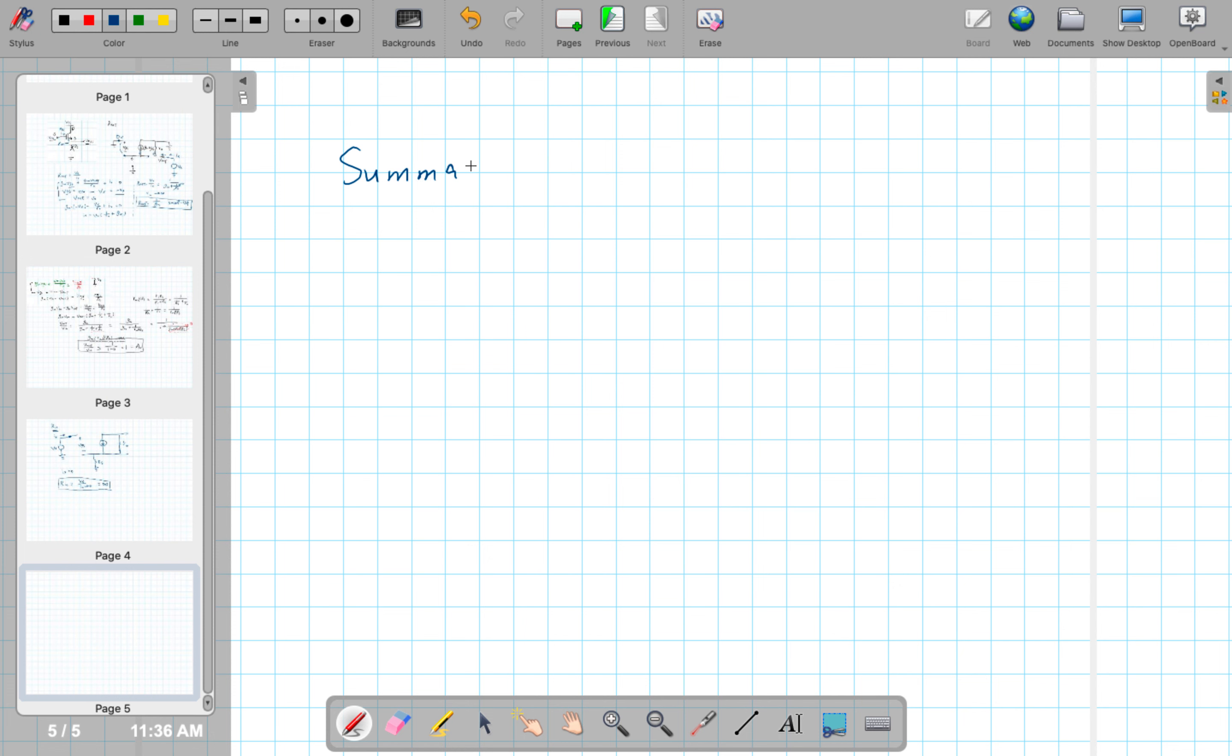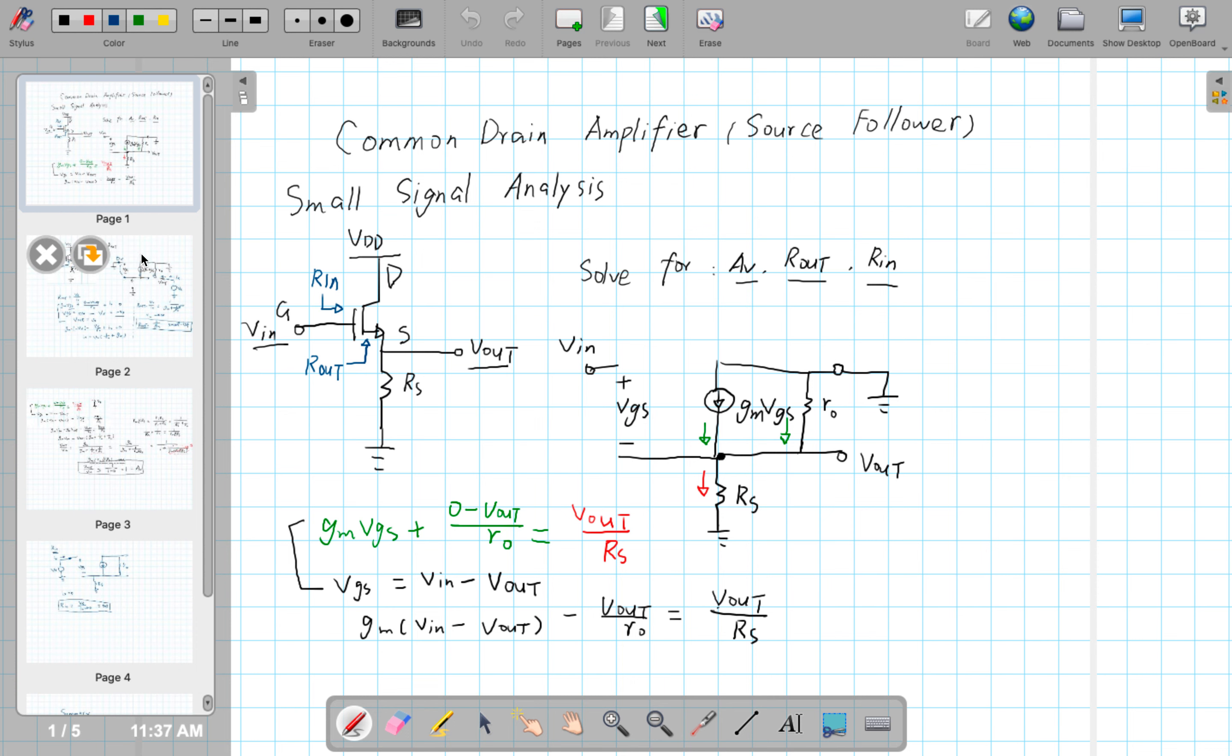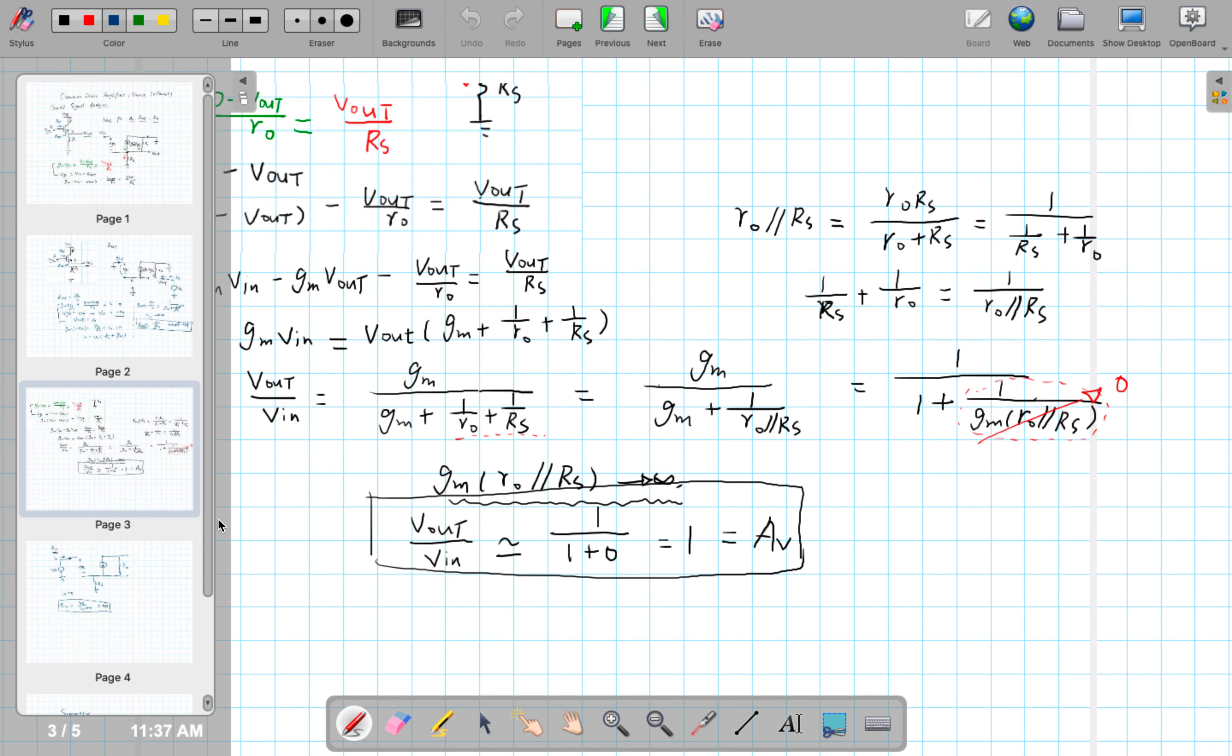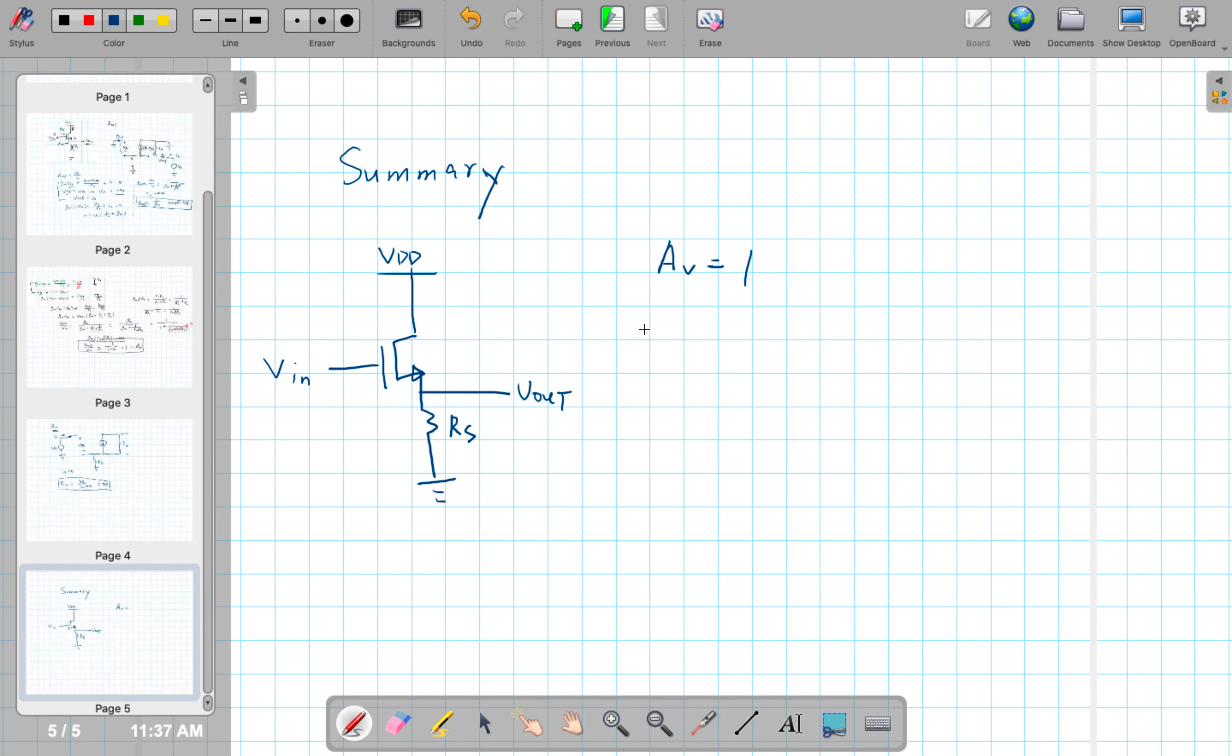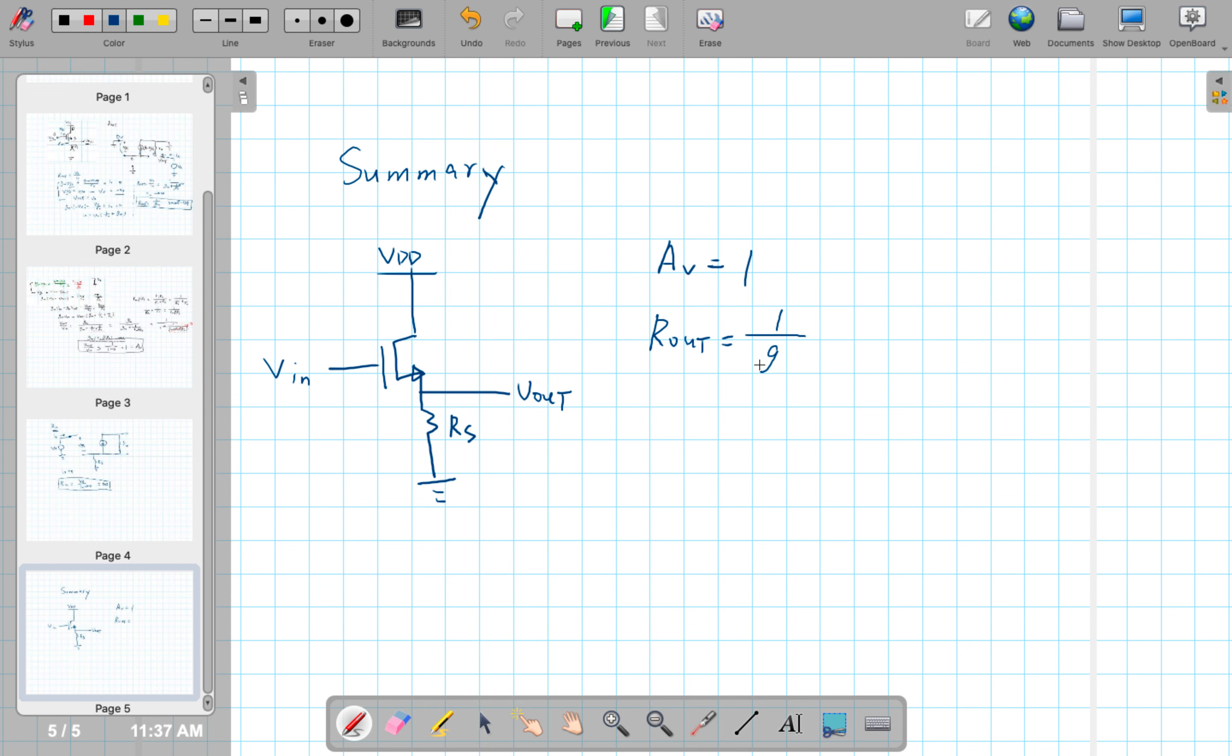So, let's summarize. So the voltage gain equals to approximately 1, the output resistance equals to approximately 1 over GM, and the input resistance is large.